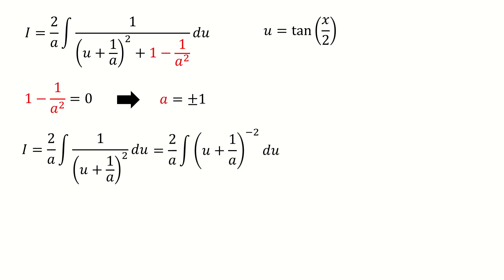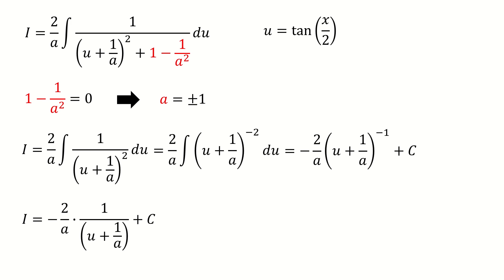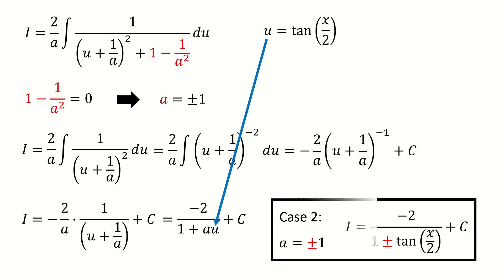We rewrite the expression as a power of negative 2, integrate it, then write it in fraction form and simplify. Finally, we plug in u equals tangent of half x to get the answer for case 2, when a equals plus or minus 1. Note the sign: when a equals positive 1, we take the plus sign in the result; when a equals negative 1, we take the minus sign. Case 2 is a little more complicated than case 1, so I call this integral sheep-like.